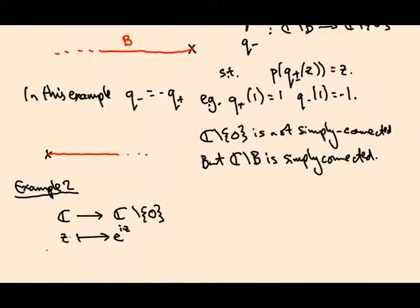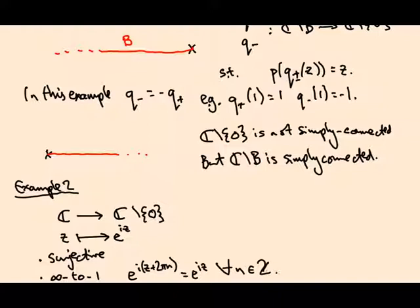It's not two-to-one anymore, it's not injective, it's actually infinite-to-one. Any point has infinitely many preimages because e^(iz + 2πn) = e^(iz) for any integer n.